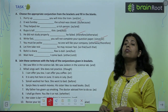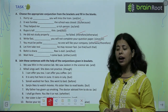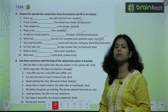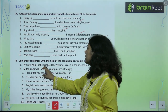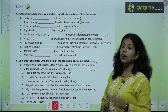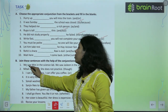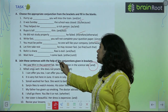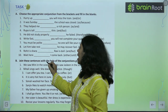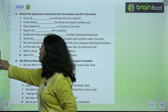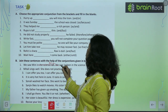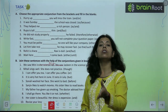Join these sentences with the help of conjunctions given in the bracket. We saw Minnie in the science lab. We saw Jocelyn in the science lab. Answer: We saw Minnie and Jocelyn in the science lab — dono nouns ke beech mein 'and' aayega.